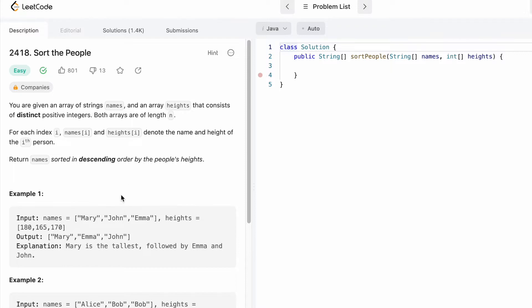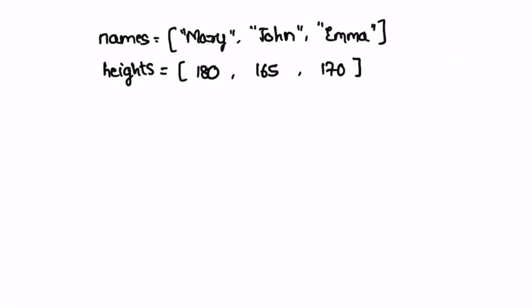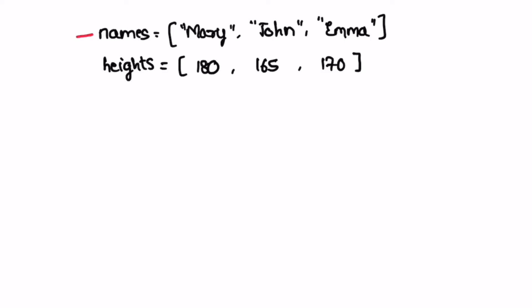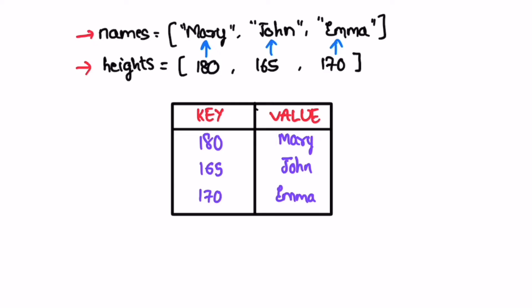Let's take a look at this example and see how this question can be solved. This is the input array names and this is their corresponding heights inside an integer array. We have to associate each height with their respective name. To form a pair, you can use a hash map to store these values as a pair — the key will be the heights and the values will be their names. Once you fill the map, the keys will hold the heights and the values will hold the names.